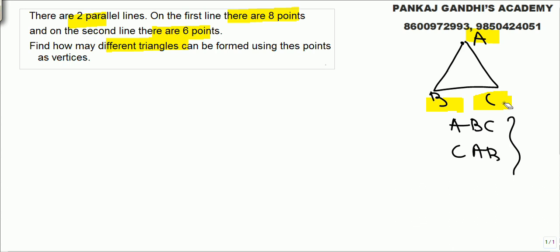It is just selection of three points. We need three points to make a triangle. Sequence does not make any difference. So this is what technically is called combination when the sequence does not matter.